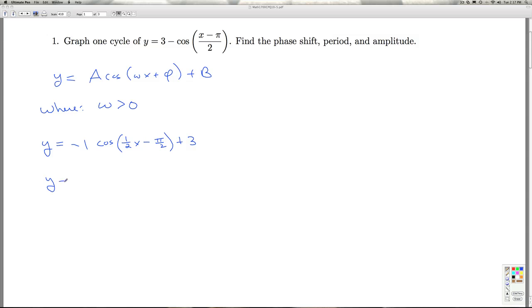Or to be overly pedantic about it, to put it in this form, I have negative 1 cosine 1 half x plus negative pi over 2 plus 3.